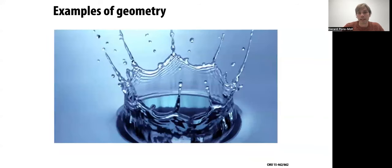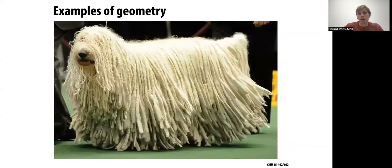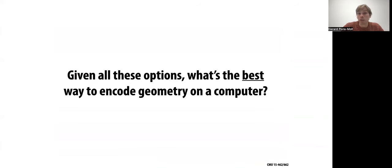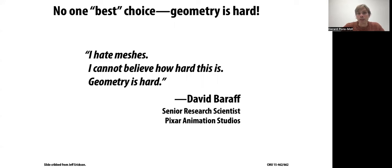You can have shapes that split and merge like fluids — for this, meshes are probably not a good representation. You might have shapes that are complex at different scales, like a full city where you want fine detail — probably a single mesh is not a good idea. Or you might have to model complex hair, where a volumetric representation might be better suited than surfaces alone. Given all these options, it's a natural question to ask: what's the best way to encode geometry? It really depends on what you're trying to model.